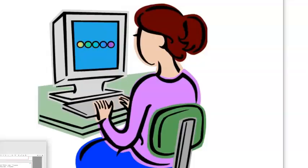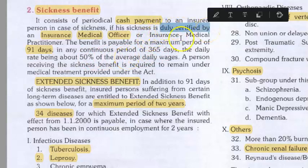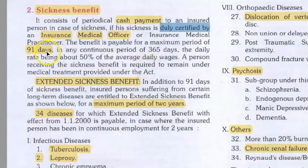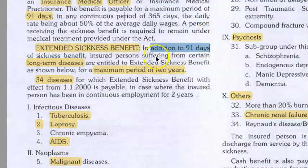Next is sickness benefit — cash payment in case of sickness for 91 days, certified by an insurance medical officer. That is around 3 months. Extended sickness benefit is for people with long-term diseases, in addition to the 91 days, for a maximum period of 2 years. The employee should also have been employed for 2 years.